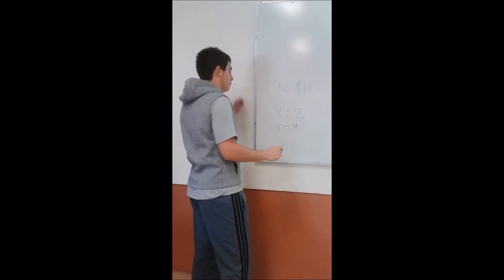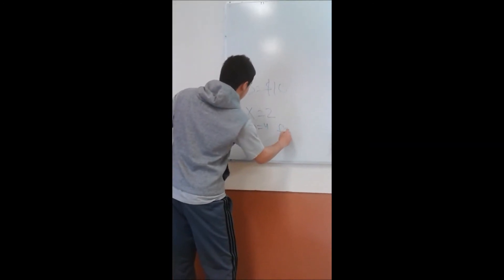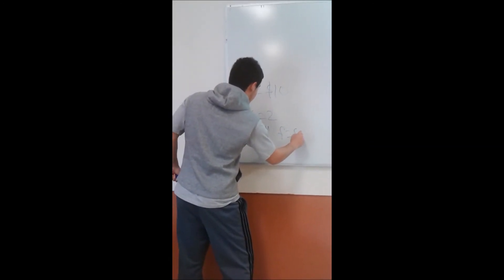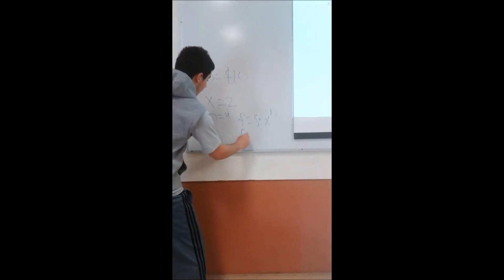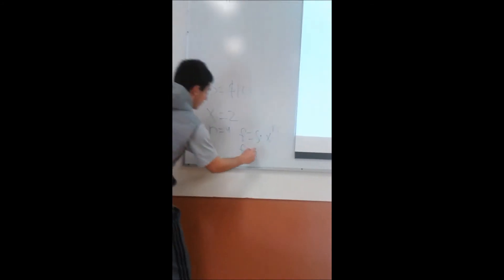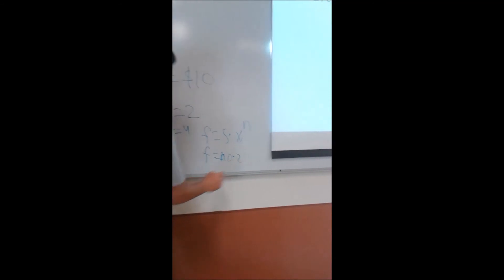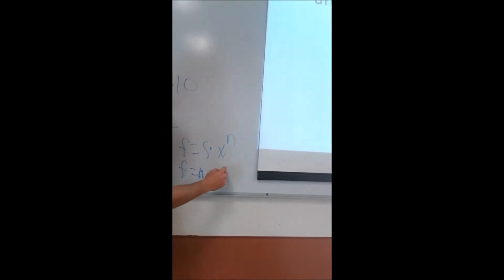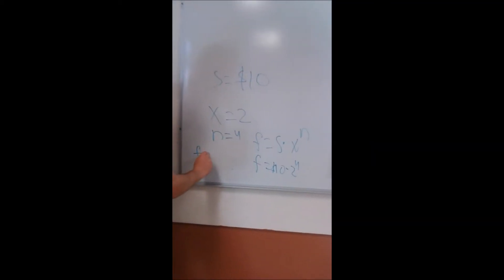So now we just have to use our function, if you want to know how much money we're going to have at the end. So f is equal to s times x to the n. Now, let's substitute this. We know s is $10. Now, x is 2, and n is 4. So then, it's going to be 10 times 2 to the 4. 2 to the 4 is 16. So f is equal to 16 times 10, which is $160.